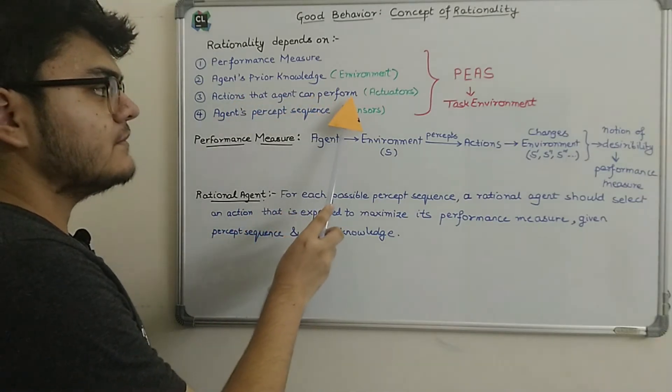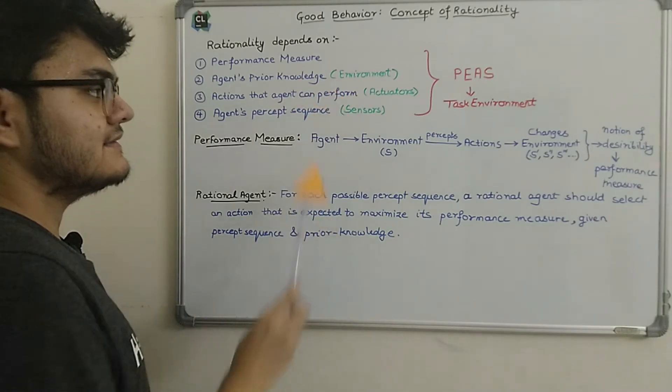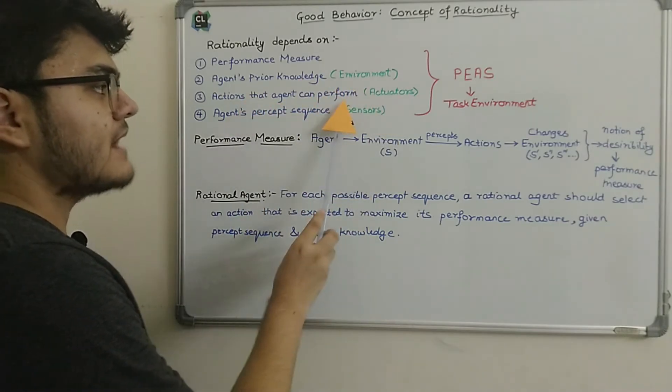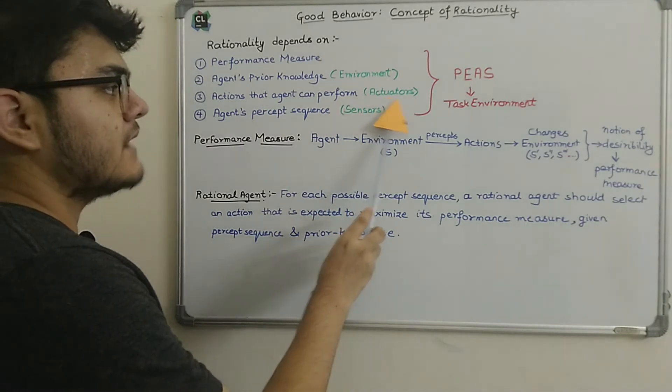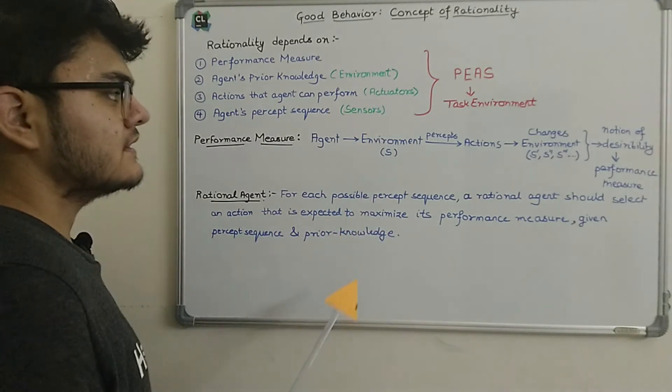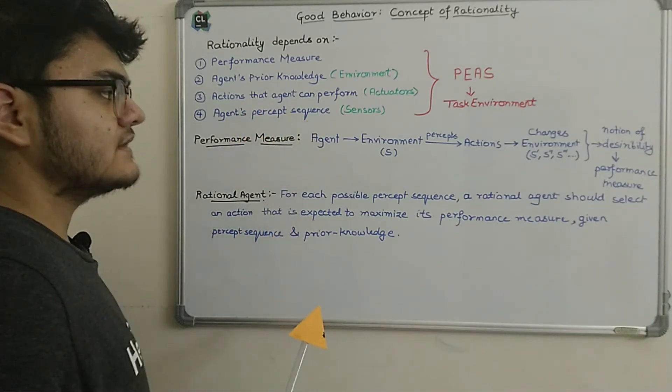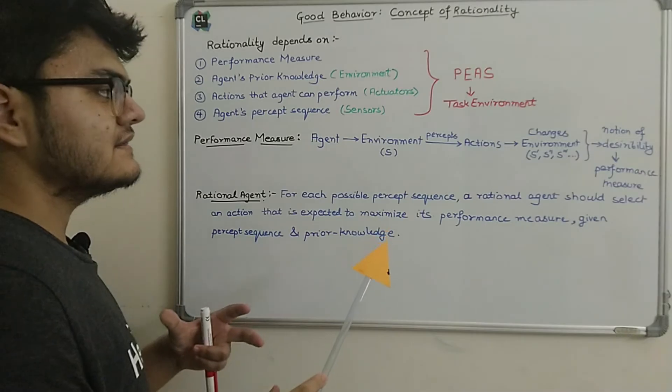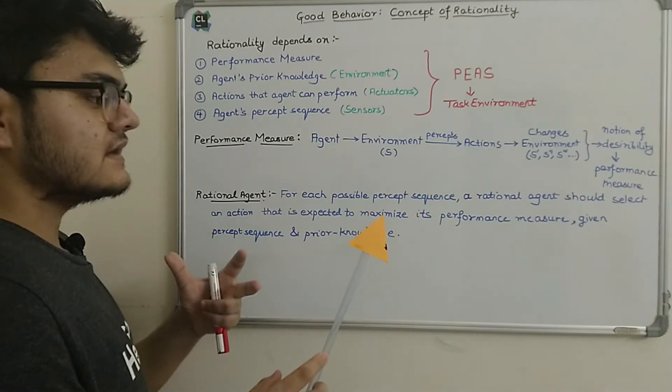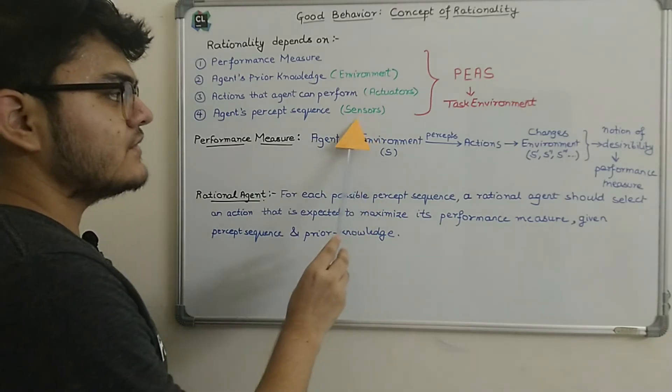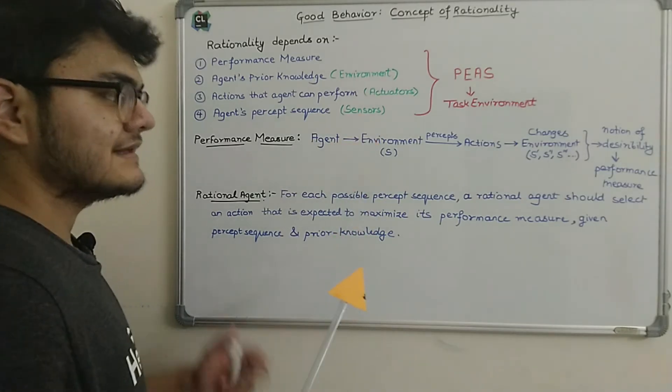So basically agent's prior knowledge comes from the environment. Actions that agent can perform—this is the third dependency, and we know that an agent will perform some actions by actuators. The fourth one is the agent's percept sequence, and the percept sequence is basically the history of what the agent has perceived from the environment. And we know that it comes from the sensors.